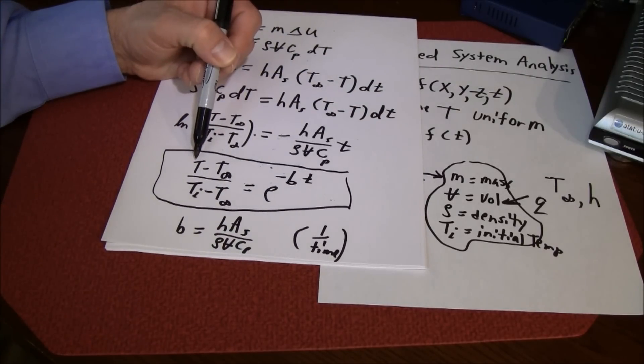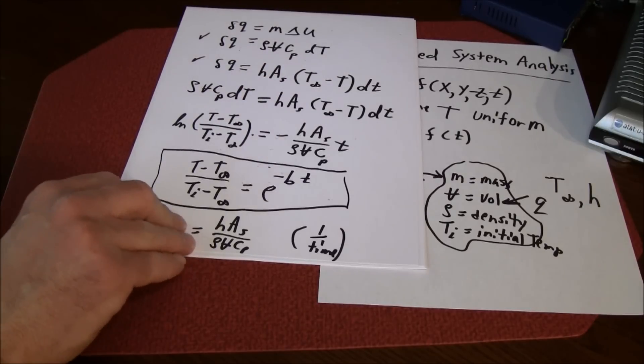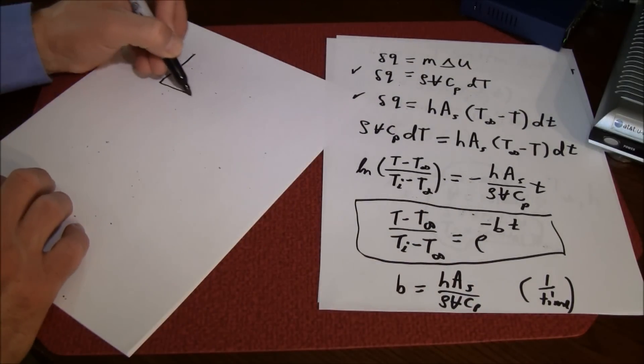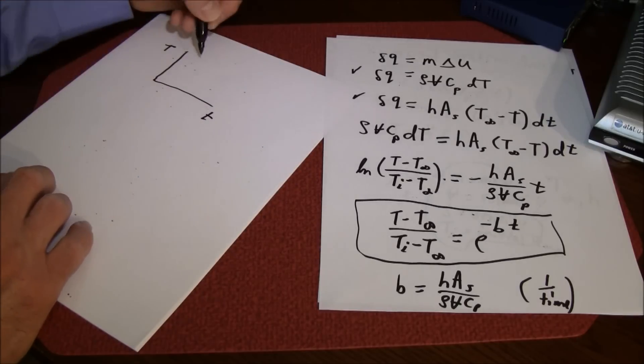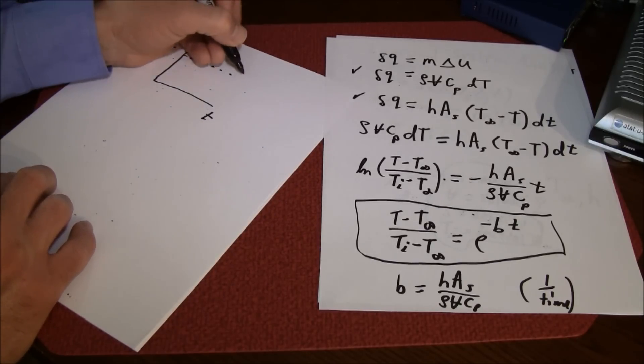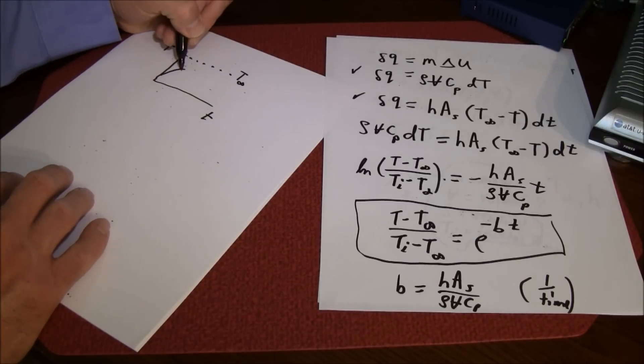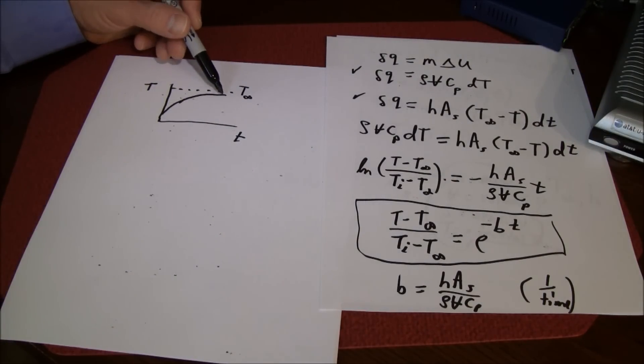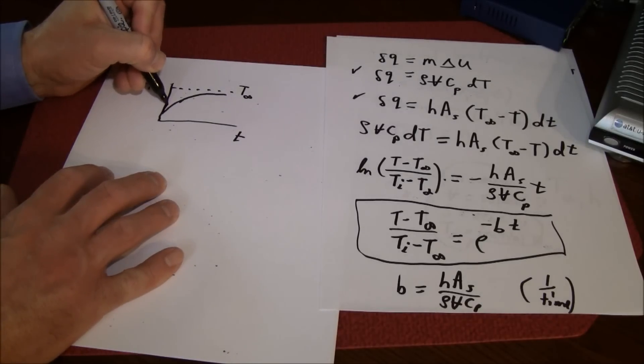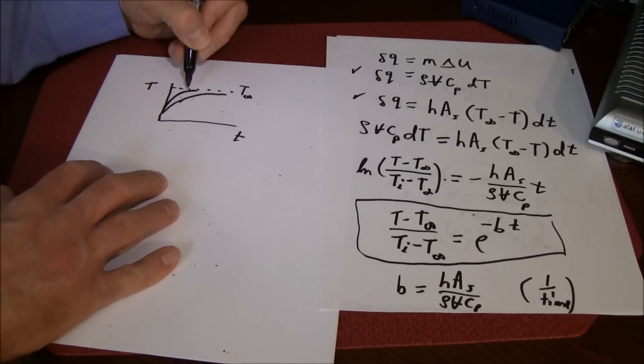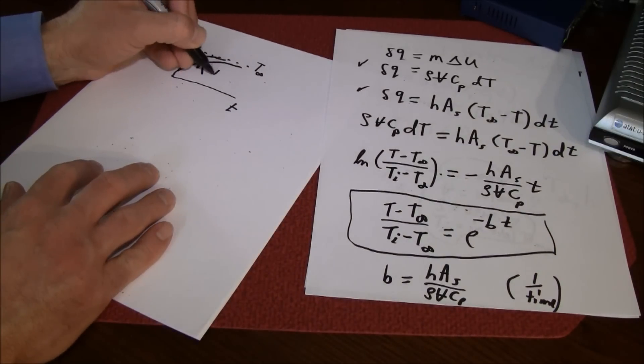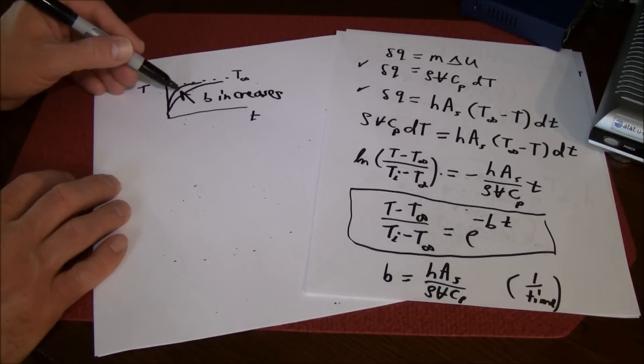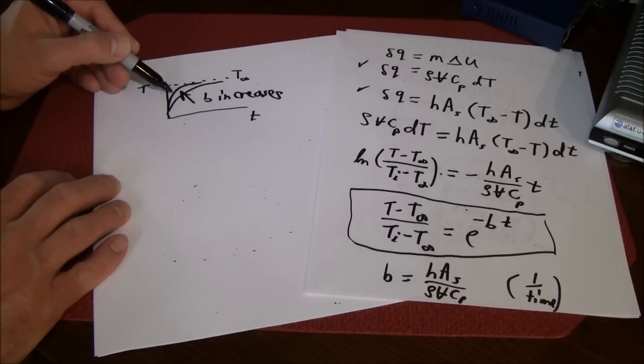Here's the main equation assuming a lump system analysis. Notice that the temperature changes exponentially. If you look at temperature versus time, if we plotted a graph here, the temperature is going to change like this qualitatively. You'll get large changes in the beginning and then it will taper off. Now if b is bigger you'll get a steeper change. So as the time constant increases, you'll get a quicker change in temperature with time.